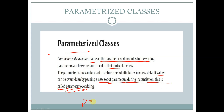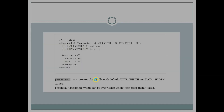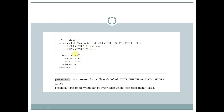Parameters are constants, and these constant values can be overridden at the time of instantiation. This is called parameter overriding. Let us see an example.